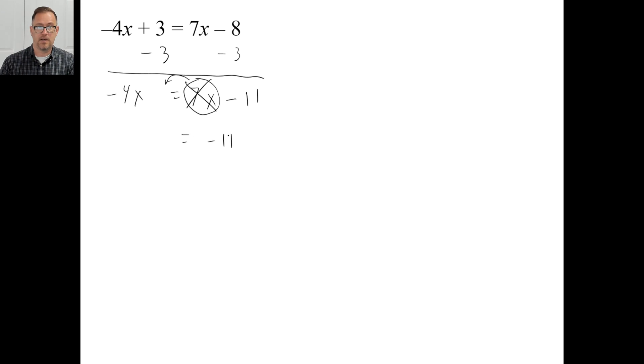I'm just going to write that negative 11. When this 7x moves over, it turns into negative 7x. And now I have a negative 4 of something and a negative 7 of something, which gives me a negative 11x. Well, negative 11 times what gives you negative 11? Well, if you didn't see it, I'm sure you do. But divide by negative 11. And of course, the answer is 1. There we go.